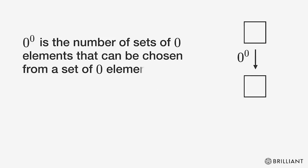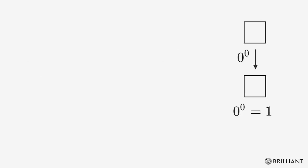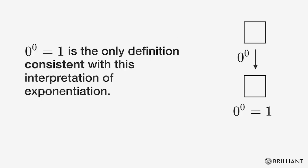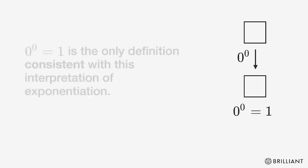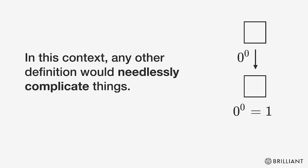Then zero raised to the power of zero is the number of sets of zero elements that can be chosen from a set of zero elements, which must be one. So one is the only definition consistent with this interpretation of exponentiation. In this context, any other definition would needlessly complicate things.